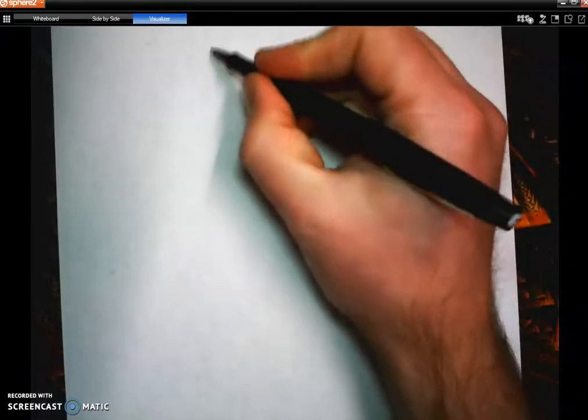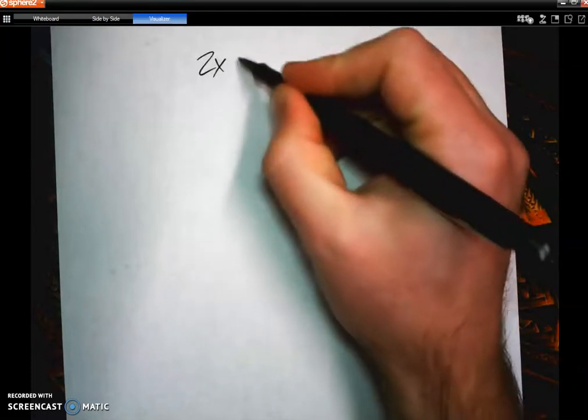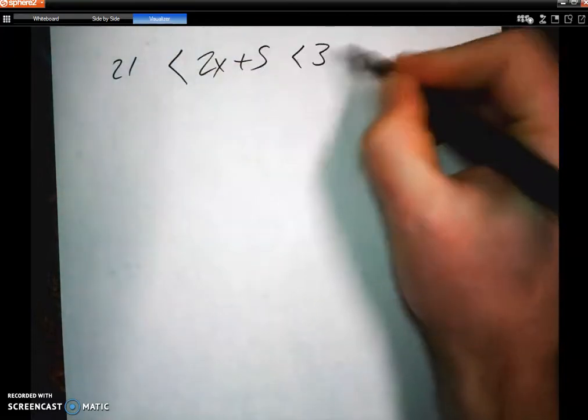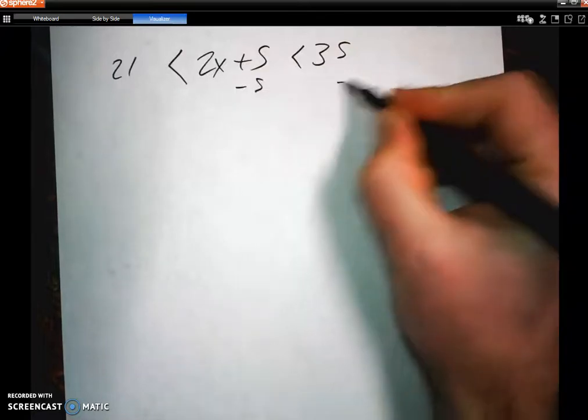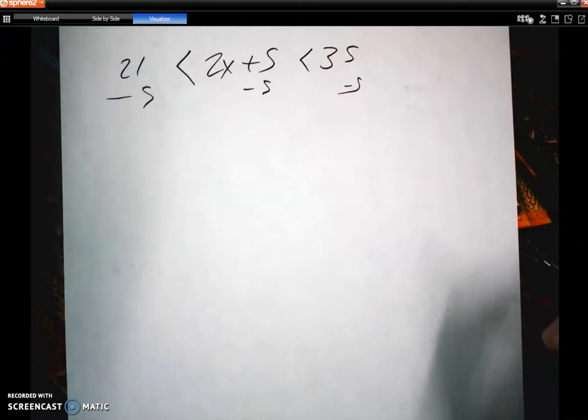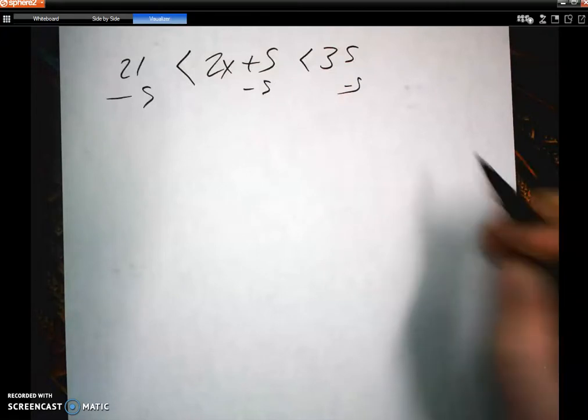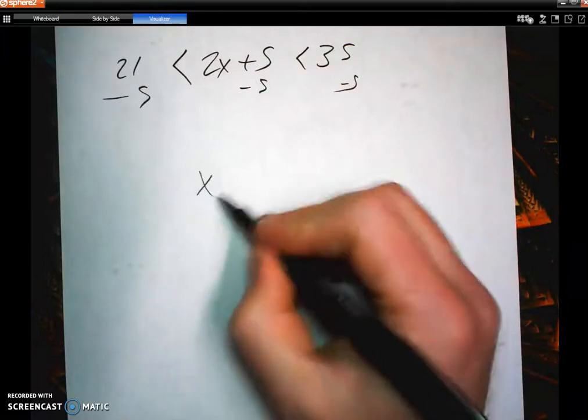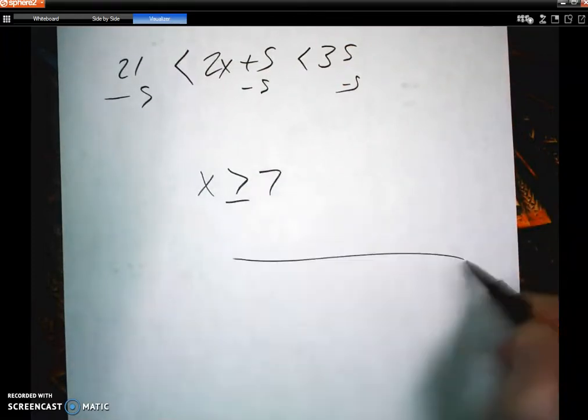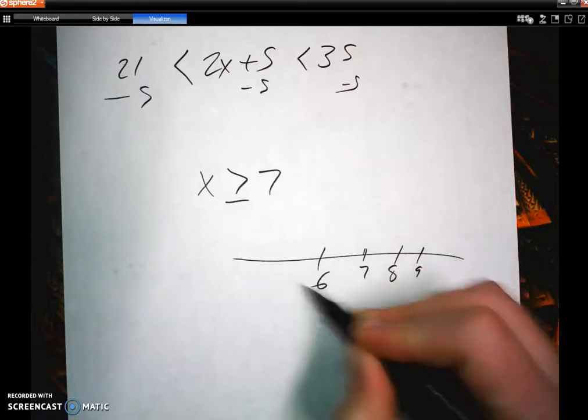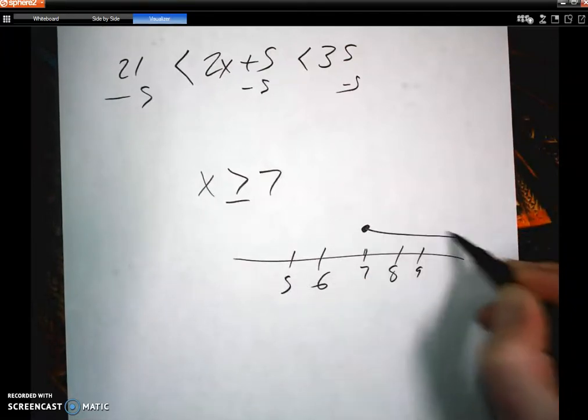And again, a lot with equations, inequalities as well. Remember compound inequalities where you have like 2x plus 5 is got to be greater than 21 but less than 35. And can you solve compound inequalities where you subtract 5 from both sides and divide by 2 on both sides and answer questions like that. And along with that, do you understand what a compound inequality looks like? So if you get an answer where x is greater than or equal to 7, can you take a line and can you graph that where you have 7, 8, 9, 6, 5. And that's a closed circle, it's greater than, it's going to the right.